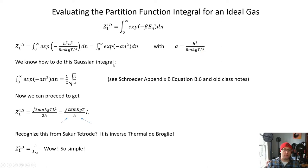So we know how to do this integral. This is just a Gaussian integral. So this integral turns out to be one-half square root of pi over a. So if you've forgotten about this, you can go to Appendix B of Schroeder. Equation B.6 shows you this. And we derived this kind of expression in our old class notes.